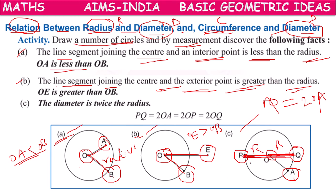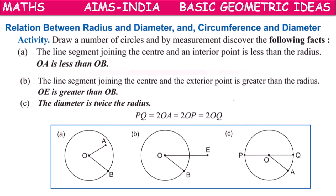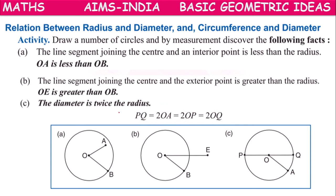Diameter D equals R plus R, which is 2R. PQ equals 2 OA, or 2 OP, or 2 OQ, since OA, OP, and OQ are all radii. So the diameter is twice the radius.